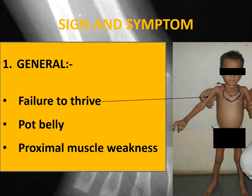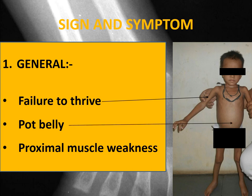In this picture you can see the child is having visible muscle wasting, not gaining weight and height according to the age — we label this as failure to thrive. Pot belly or distended abdomen is also present in this patient.